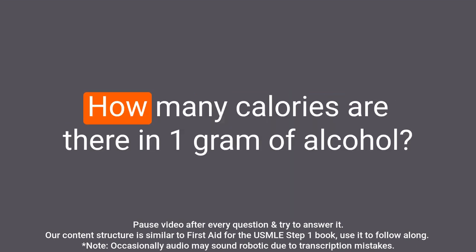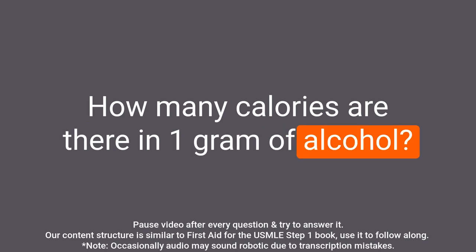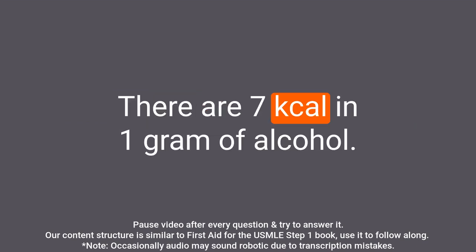Question: How many calories are there in one gram of alcohol? Answer: There are seven kcal in one gram of alcohol.